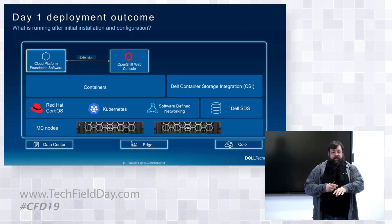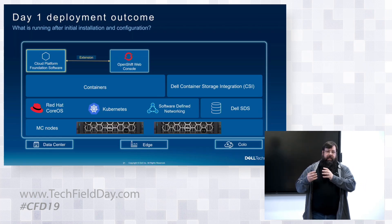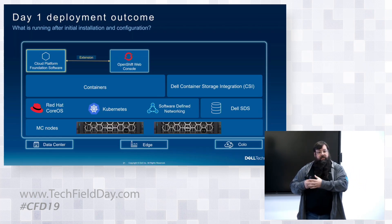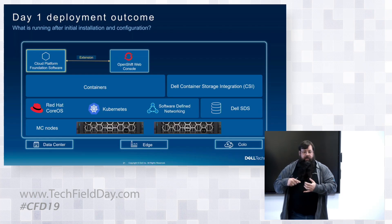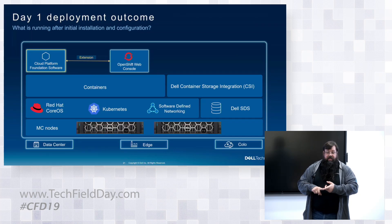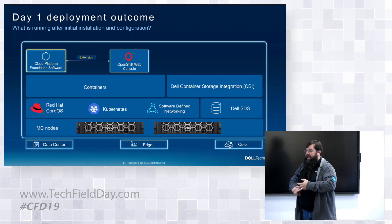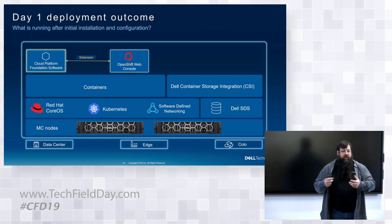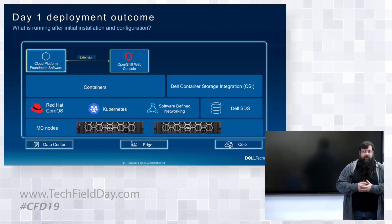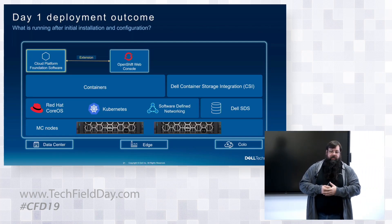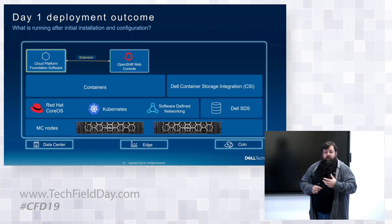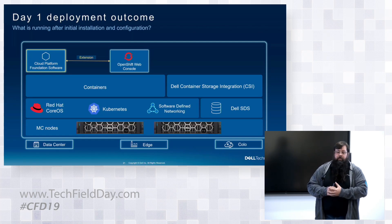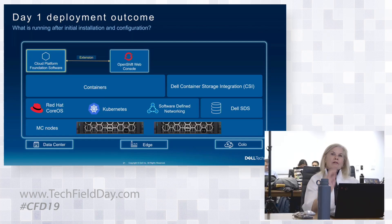This is licensed using OpenShift Platform Plus — a specialized SKU of Platform Plus. It includes entitlements for Advanced Cluster Management (ACM), Advanced Cluster Security (ACS), and Quay. So if you're familiar with OpenShift, you have those entitlements to do multi-cluster management and multi-cluster security. These are all included — it's part of the license, covered by the OpenShift Platform Plus subscription that comes with this.